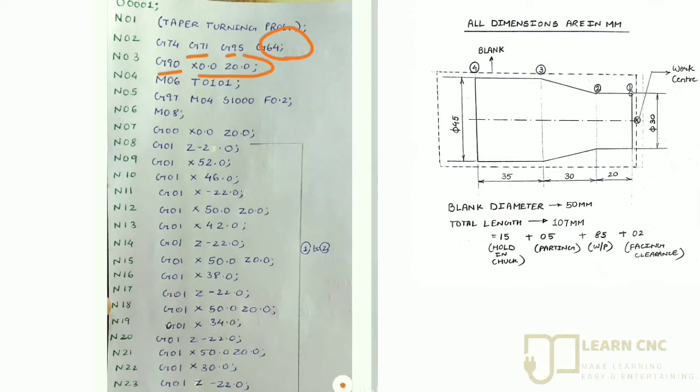So X0, Z0, that is with the G74, and we are telling the tool to reach at reference point. Reference point is also called as offset point.